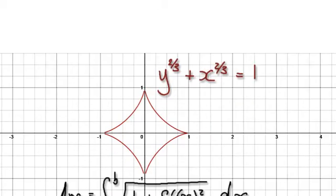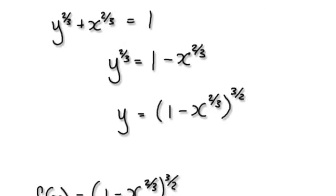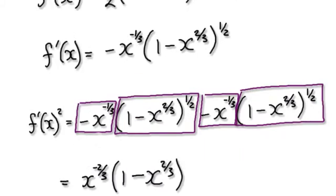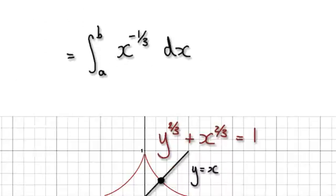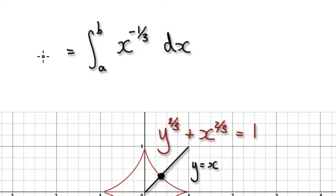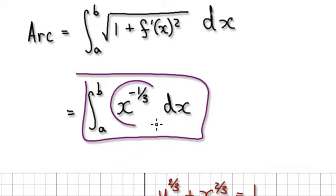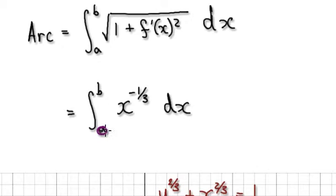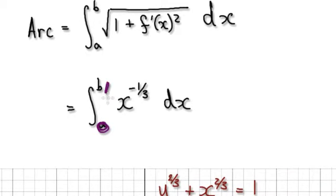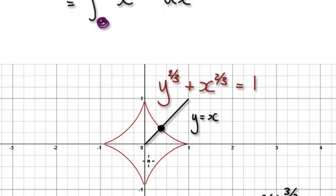Following on from the previous video, we wanted to work out the perimeter, and we got to this stage here where the arc is given by this expression. So now all we need to do is integrate it, but we can't do it from 0 to 1 because it breaks down at 1.